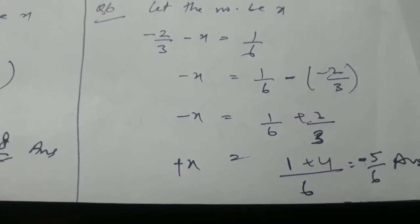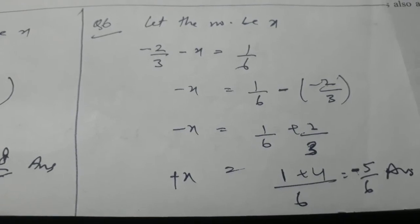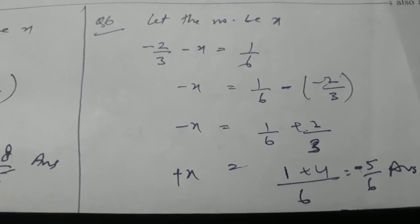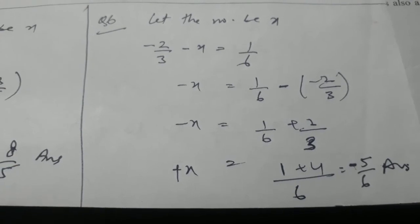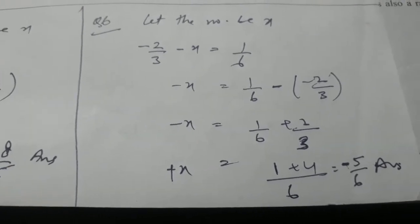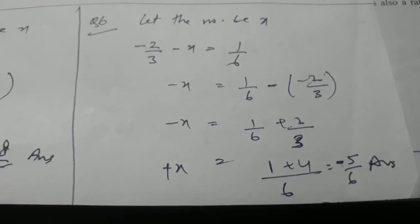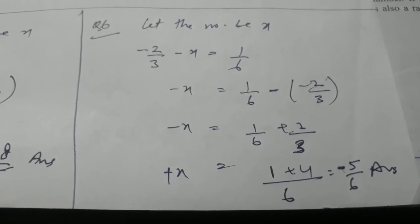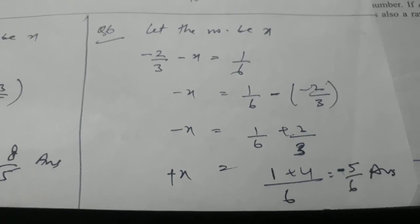As minus 2 by 3 is in the left hand side, shift this minus 2 by 3 to the right hand side. So on the left hand side, minus x equal to 1 by 6 minus minus 2 by 3 would be there. Minus x equal to 1 by 6, minus minus will turn into plus. That is 1 by 6 plus 2 by 3. Taking the LCM and dealing the LCM with the numerators, next step would be 1 plus 4 by 6 equal to minus 5 by 6. So in question number 6, the answer would be minus 5 by 6. That is minus 5 by 6 is to be subtracted from minus 2 by 3 to get 1 by 6.